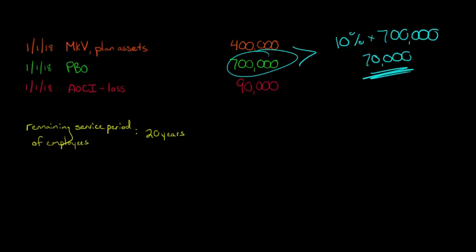That's our corridor. Now, let's look at accumulated other comprehensive income and see what's going on there. Our AOCI, we see that we have a debit balance of $90,000. And now we see that $90,000 is greater than $70,000.